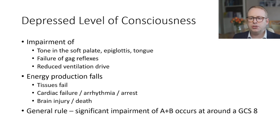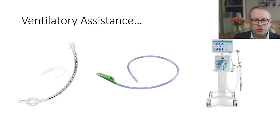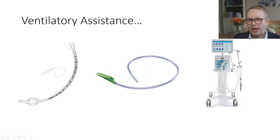As a general rule, significant impairment of our airway and breathing occurs from around a GCS of 8 — Glasgow Coma Scale of 8. In such scenarios we may need to step in and provide ventilatory assistance. We may therefore need to introduce an artificial airway such as the endotracheal tube, suction it through to clear secretions, and push air in via a ventilator.